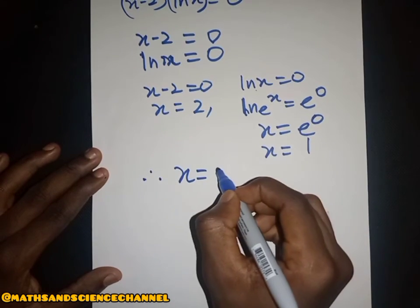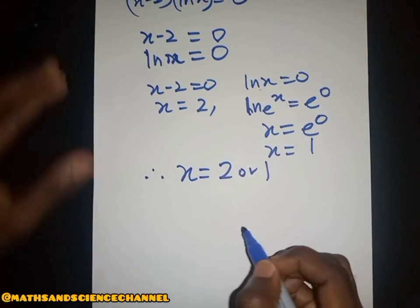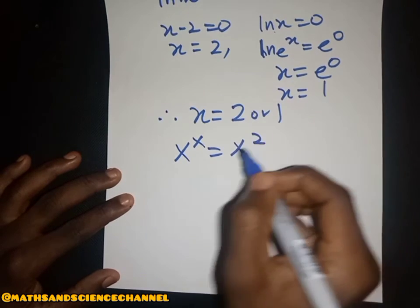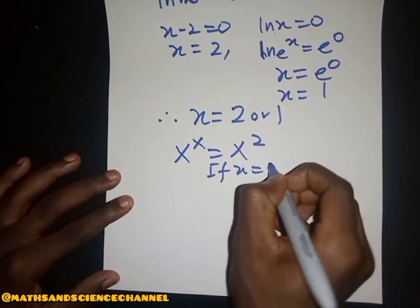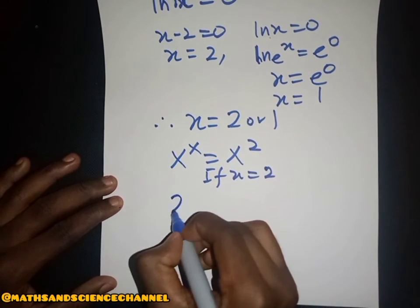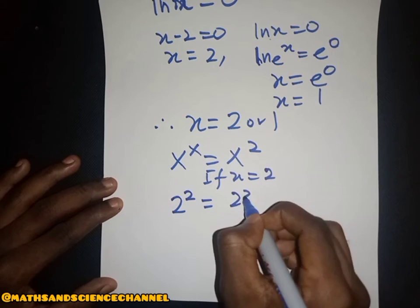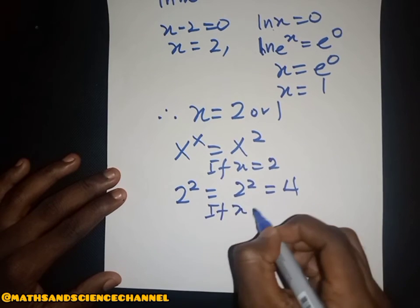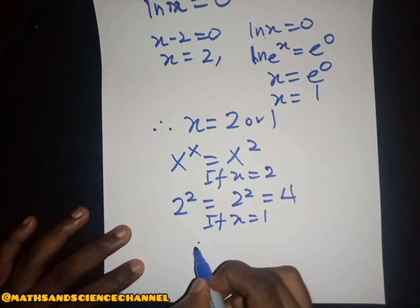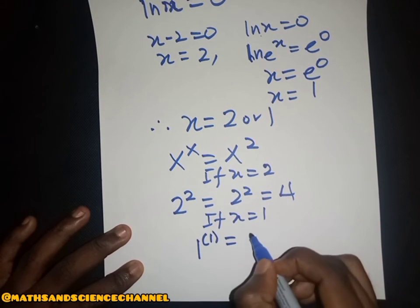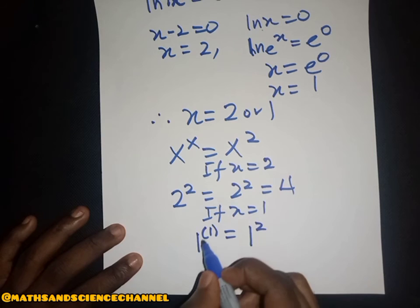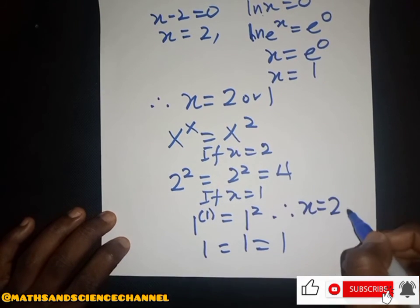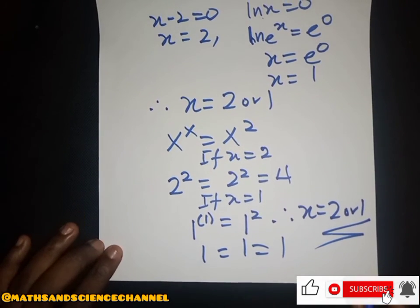Therefore we can conclude that x equals two or x equals one. Let's check: x to the power x equals x squared. If x equals two, then two to the power two equals two squared — that is four on both sides. And if x equals one, then one to the power one equals one squared — that is one equals one. Both check out.